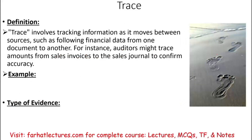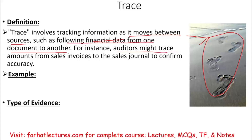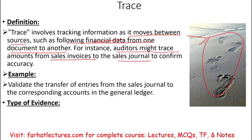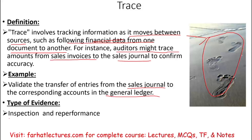Tracing involves tracking information as it moves from source to source — following financial data from one document to another. For example, auditors might trace an amount from a sales invoice to the sales journal to confirm accuracy, or validate the transfer of entries from the sales journal to the general ledger. Tracing is a form of both inspection, because you are looking at documents, and re-performance, because you are re-performing the same steps the client should have done.